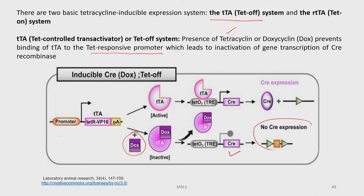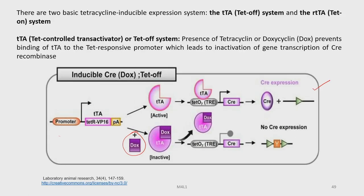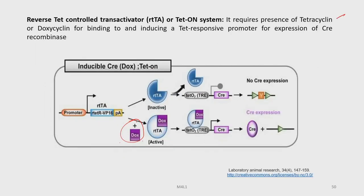In contrast, the TET-on system requires the presence of tetracycline or doxycycline for binding to and inducing the TET-responsive promoter for expression of Cre recombinase. In the first case, the presence of doxycycline stops Cre expression, but in the TET-on system, Cre expression takes place only in the presence of doxycycline. These are some of the references from which this lecture was prepared. Thank you for your kind attention.